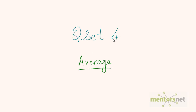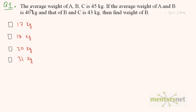This is question set 4 on averages. Question 1: The average weight of A, B, and C is 45 kgs. If the average weight of A and B is 40 kgs and that of B and C is 43 kgs, then what is the weight of B?